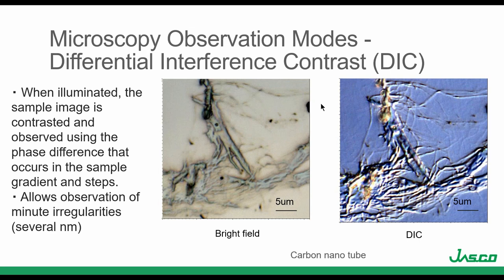The last observation mode I want to show is Differential Interference Contrast, very well known as DIC. What is really important here is that we are able to see features that don't appear under bright light. Before joining JASCO, I was working with failure analysis, and this observation mode was very useful when trying to find contamination in printed circuit boards. Sometimes in bright field I couldn't find any sign of contamination, and dark field showed nothing either. But using DIC mode was when I could find the features I was interested in.